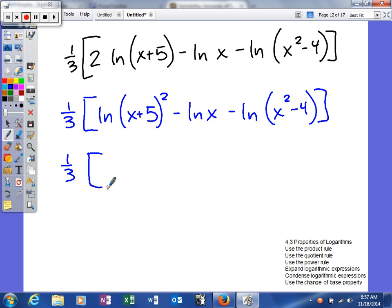I'll say the natural log. This has a positive coefficient, so it's going to end up in the numerator. This has a negative coefficient, so it'll end up in the denominator. And this also has a negative coefficient, so it will end up in the denominator.